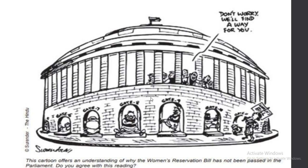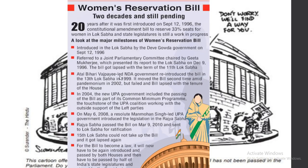The Women's Reservation Bill is a bill that is still pending. It talks about giving 33% of reserved seats for women in the Lok Sabha and state legislatures. It was passed in Rajya Sabha on March 9, 2010, and sent to Lok Sabha for ratification. But the 15th Lok Sabha could not take up the bill and it lapsed again.